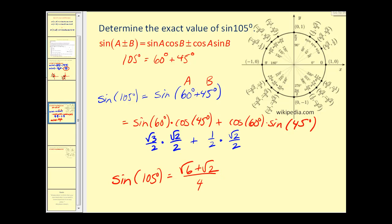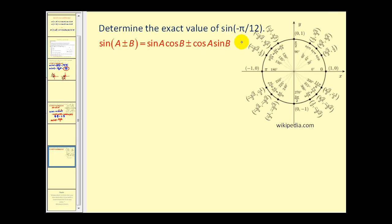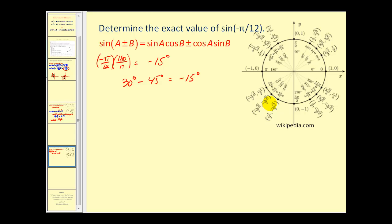For one more example, we have an angle in radians. It may be helpful to convert to degrees first: this equals -15°. We can write -15° as 30° - 45°. To stay consistent, let's use radians: 30° = π/6 and 45° = π/4. So we'll use π/6 for angle A and π/4 for angle B.